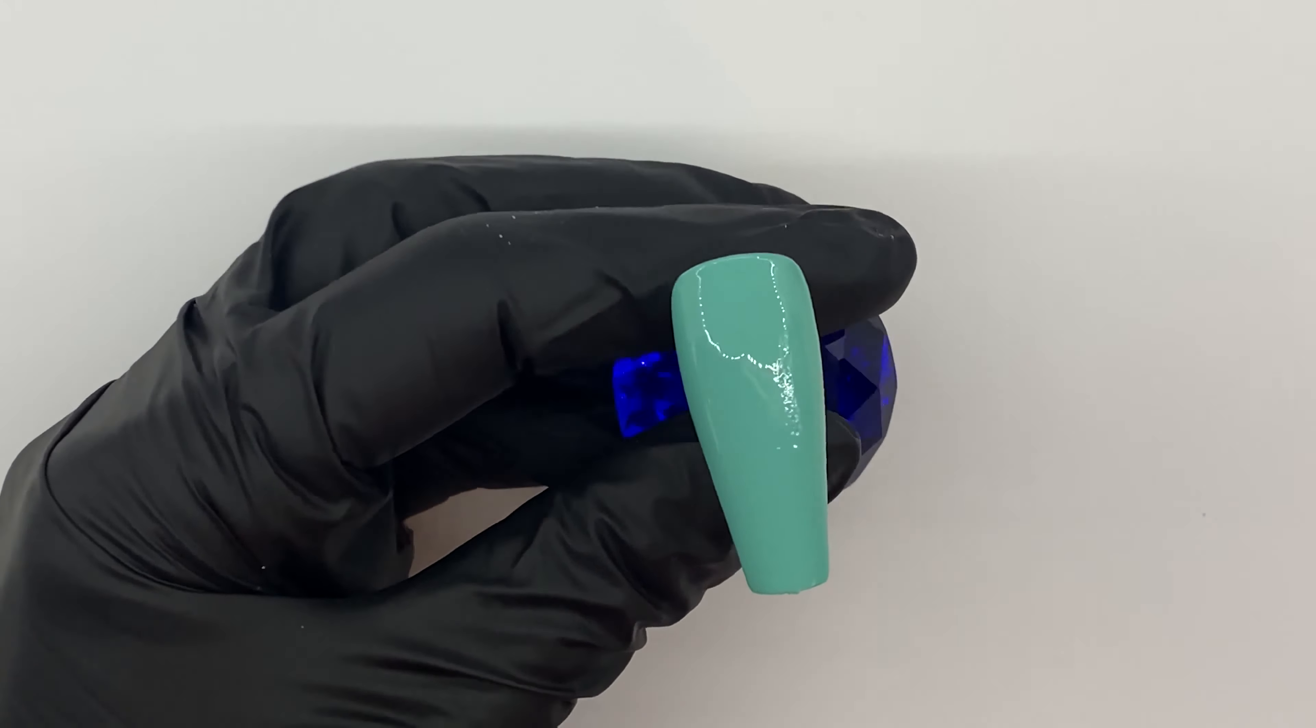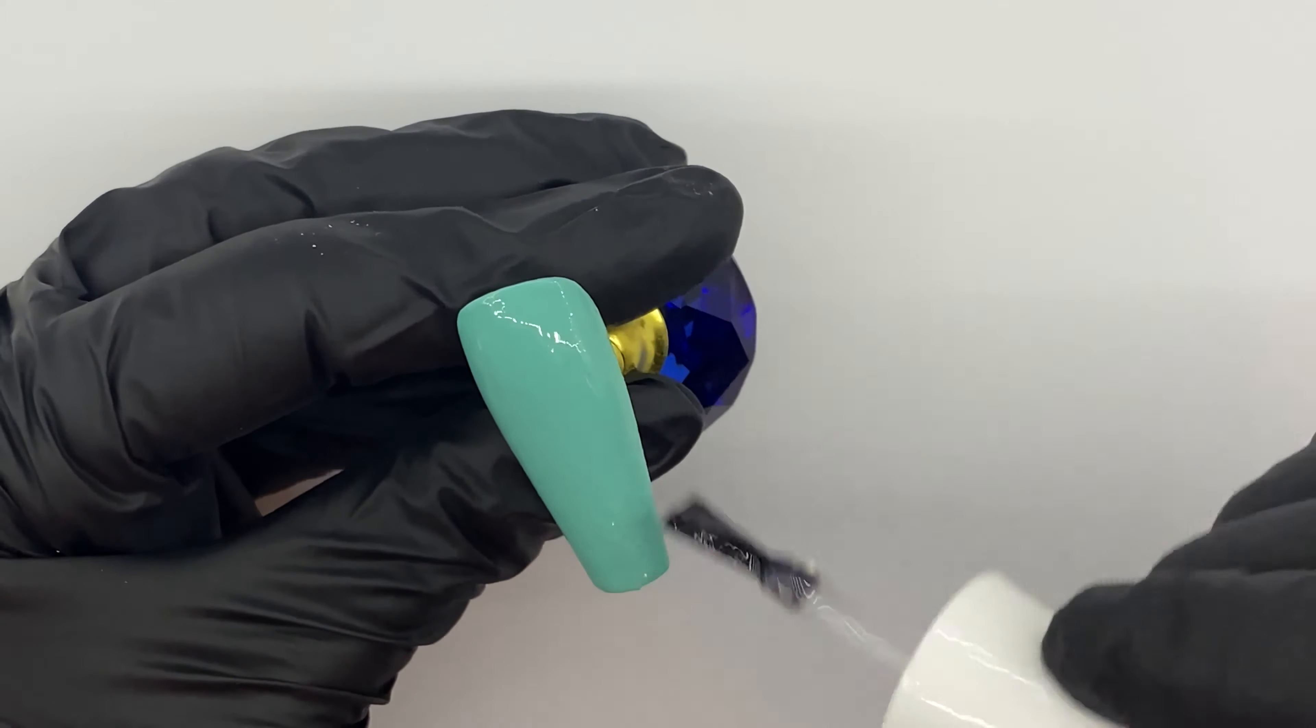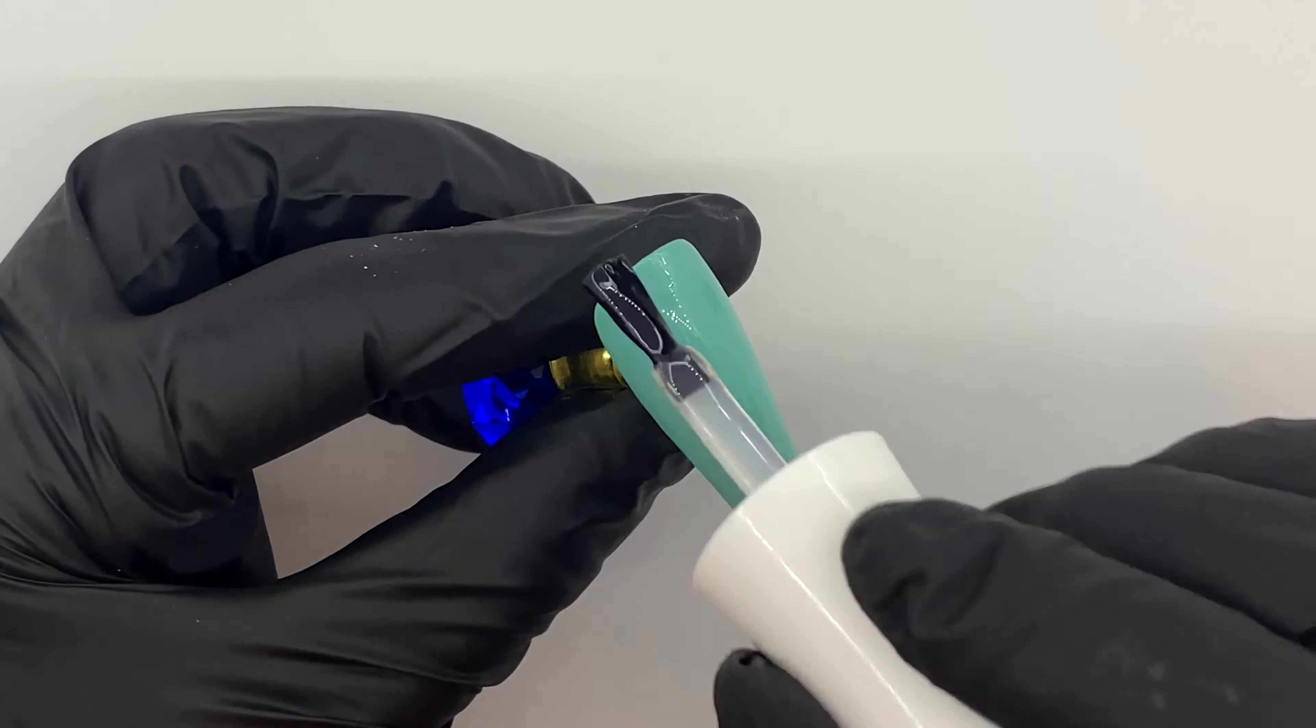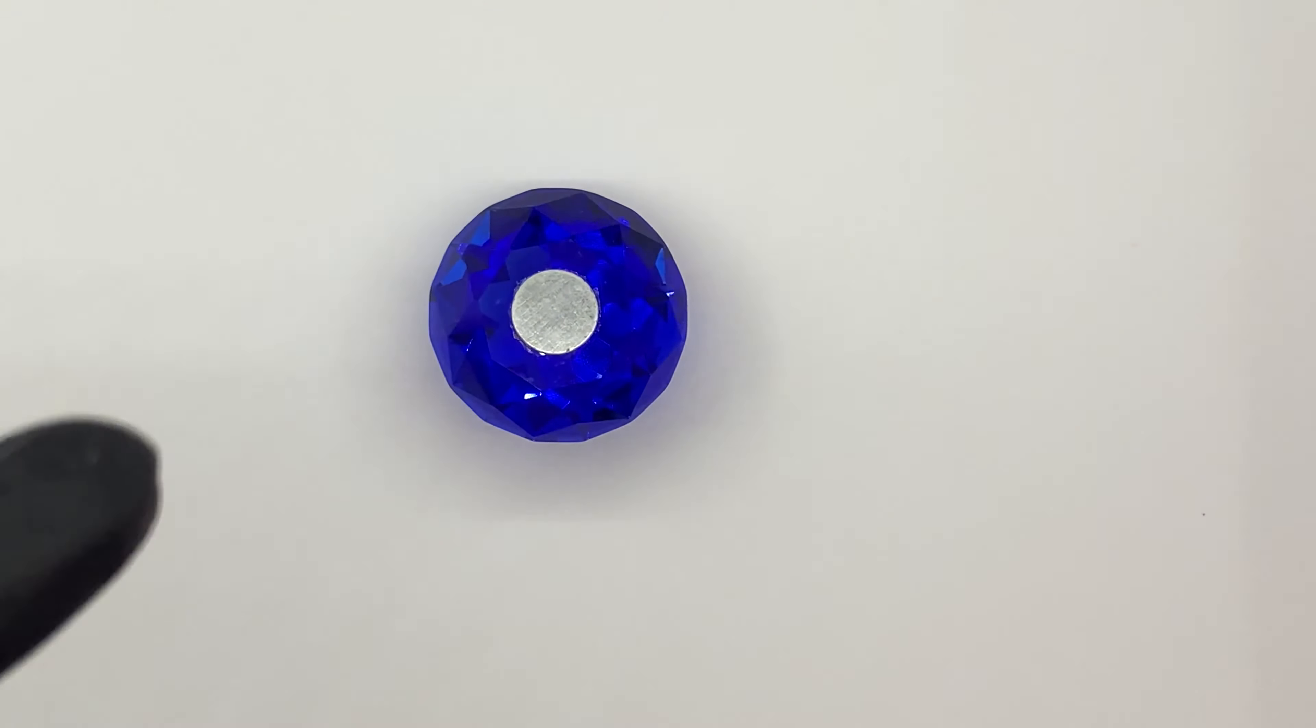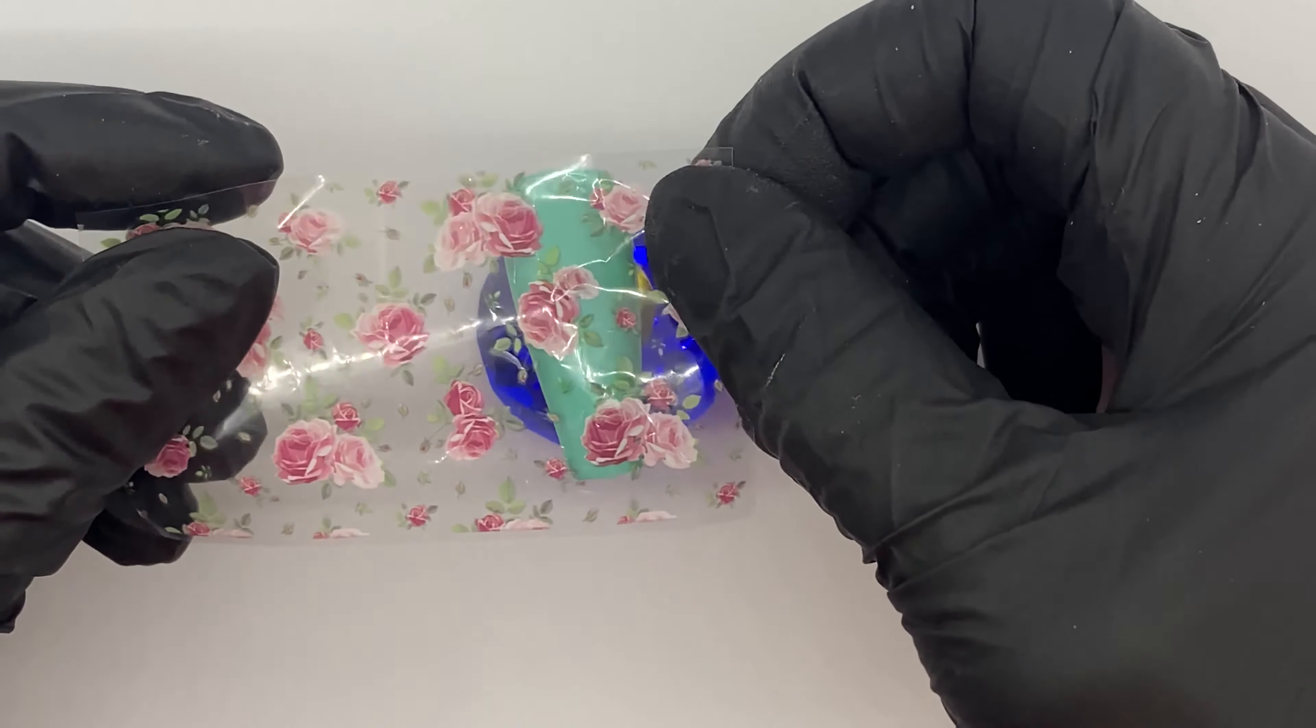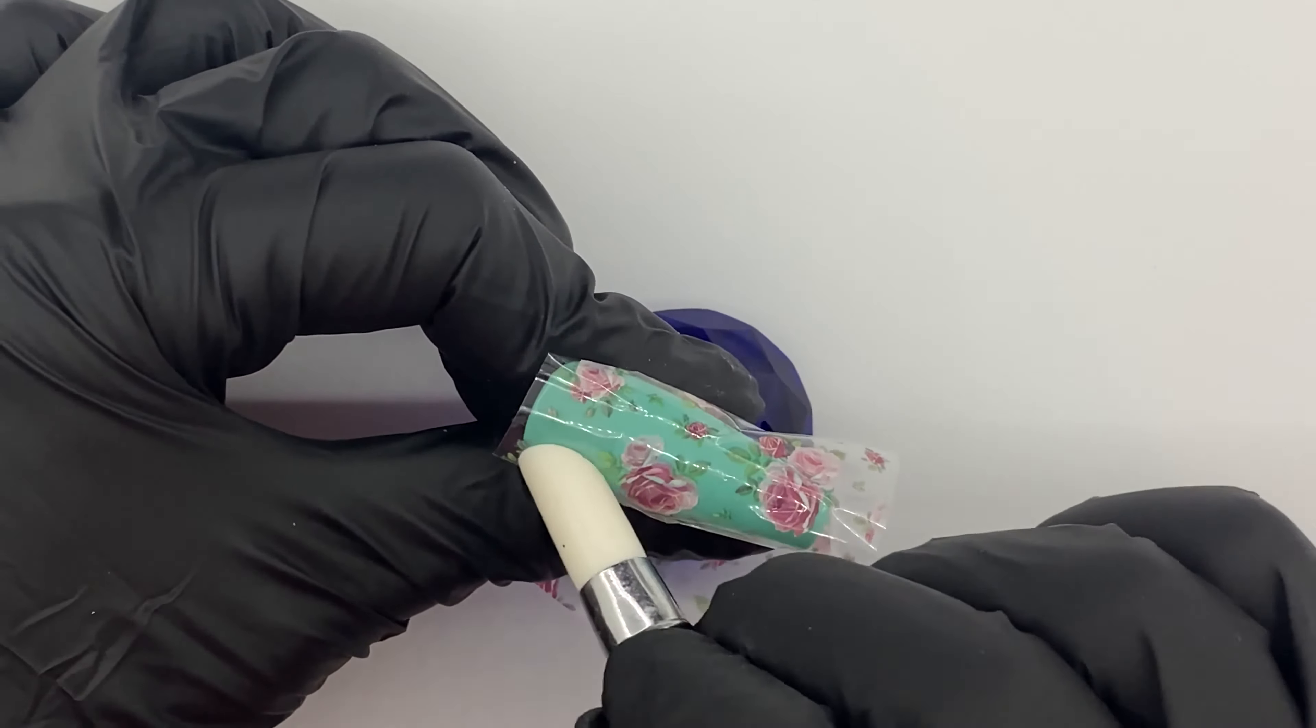Now I'm going in with some foil gel, doing a nice thin even coat, and then pop it in for a cure for 30 seconds. Once you've popped it into the lamp while it's curing, get your foil ready because it's much better to apply to the nail as soon as you get it out the lamp so it's still warm.